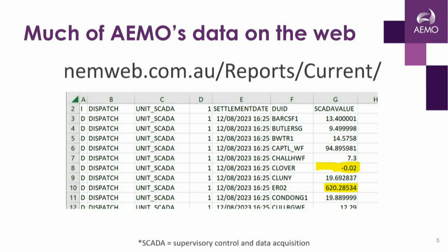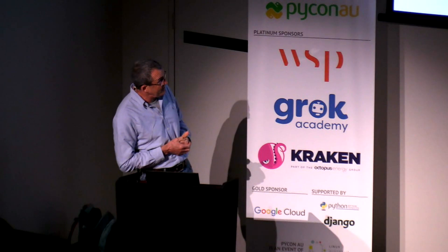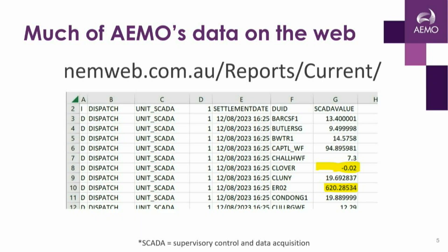This is typical market data that we deal with at work. It's available on the public internet and it shows the generation in megawatts against each generator in the NEM at a point in time. We do this every five minutes. The columns of interest are F — a value we call DUID or dispatch unit ID — and column G, SCADA value, which is the megawatts that unit is producing at that point in time. The lowest value is around negative 0.02 and the highest is around 620.